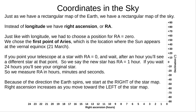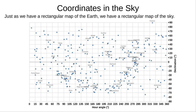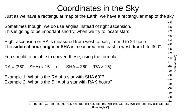But sometimes we do use degrees. In this case, we don't call it right ascension, but sidereal hour angle, or SHA. This is measured from east to west, or left to right on the star map, from zero degrees to 360 degrees. This is important — you need to be able to convert between right ascension and sidereal hour angle.